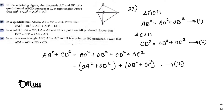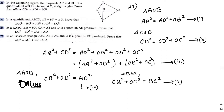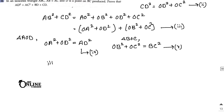Now in right angle triangle AOD, you can write OA² + OD² = AD² — equation number 4. And from right angle triangle BOC, OB² + OC² = BC² — equation number 5. Now if you substitute equations 4 and 5 into equation 3, you get the result.